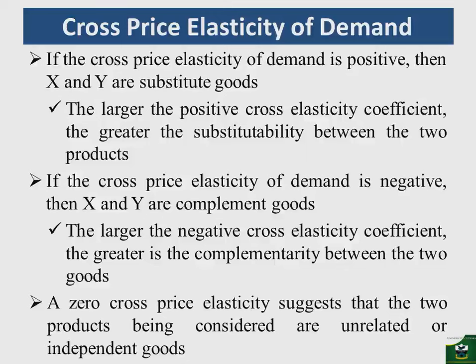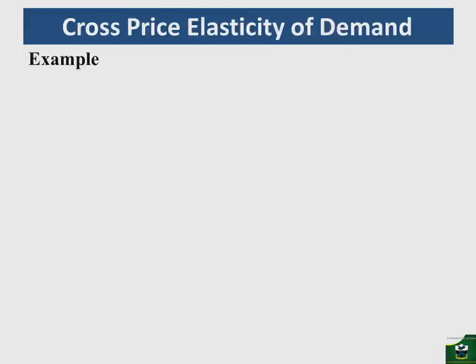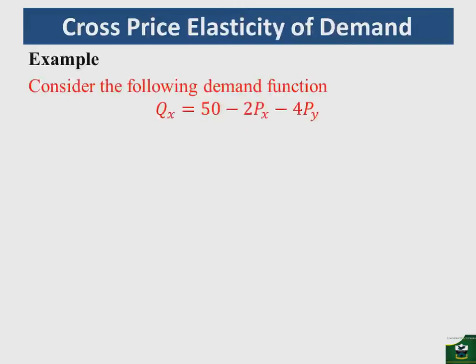A zero cross price elasticity suggests that the two products are independent. When we looked at own price elasticity of demand, the boundary value was one (unit elastic). Under cross price elasticity of demand, the landmark is zero. If you obtain a zero elasticity coefficient the two commodities are independent; if it is negative they are complements; if it is positive they are substitutes.